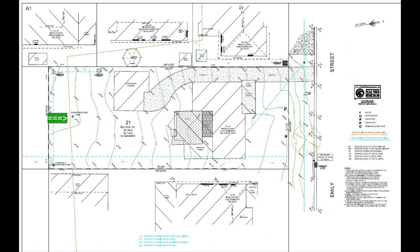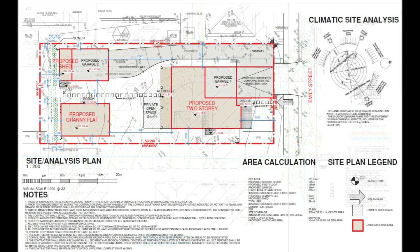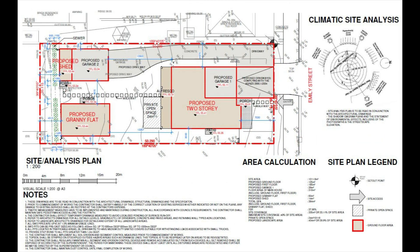As indicated in the survey plan, you can see that there is an easement going across a sewer line at the rear of the property, and it's also indicated in the site analysis plan by the architect. The architect has given one meter clearance as per the requirements of the local council or Sydney Water, for any future maintenance.